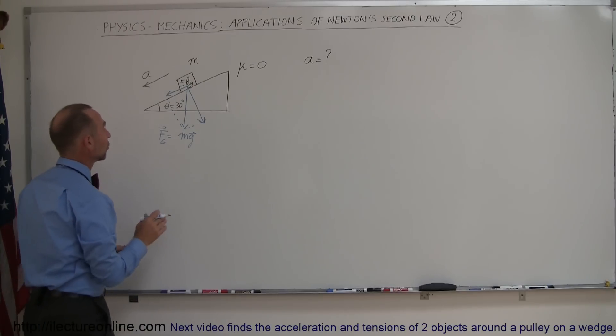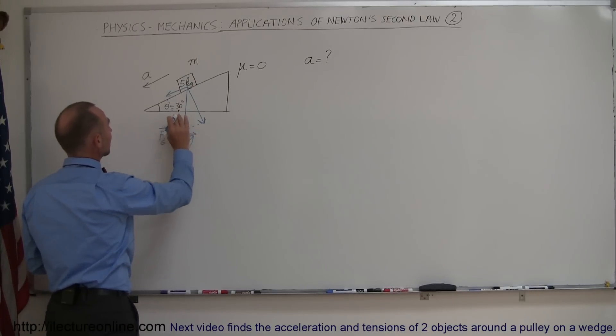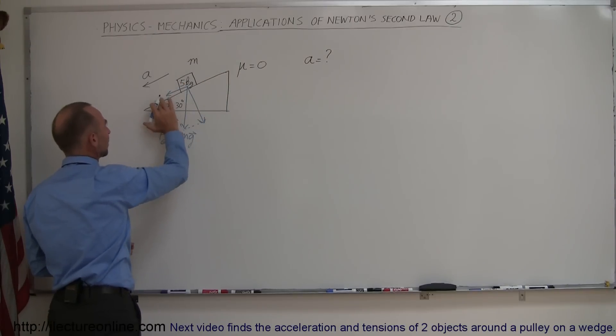Now, how do we find these components? Because of similarity here, you can see that this triangle right here is similar to this triangle, which means that this angle here is the same as this angle here.